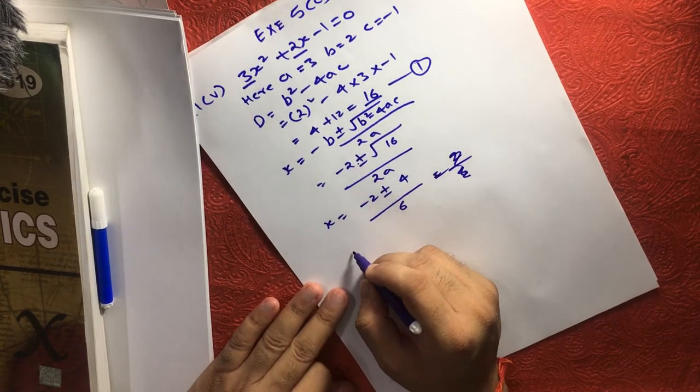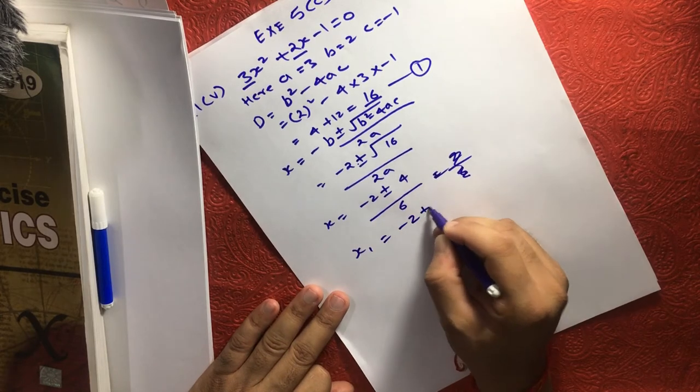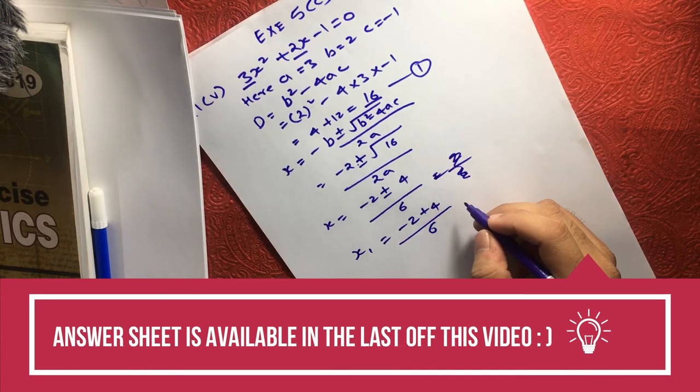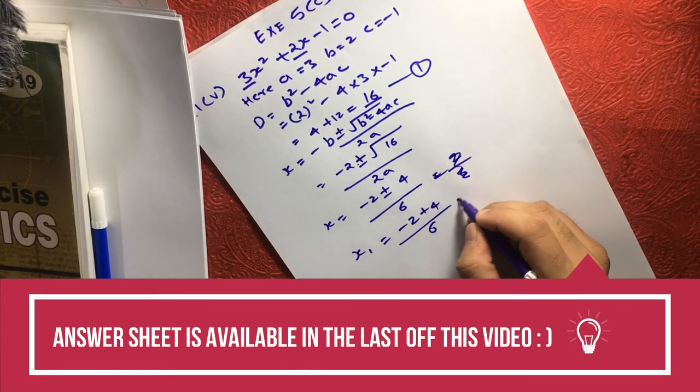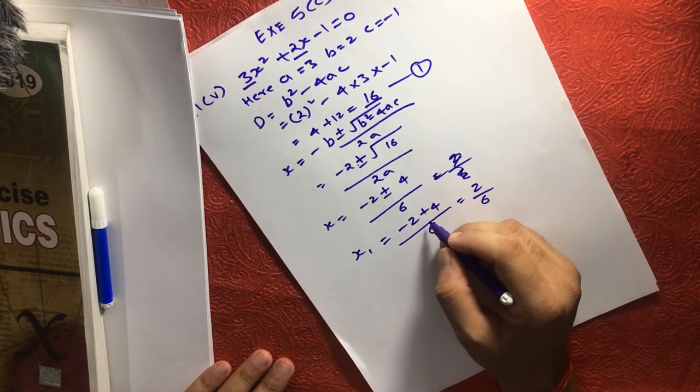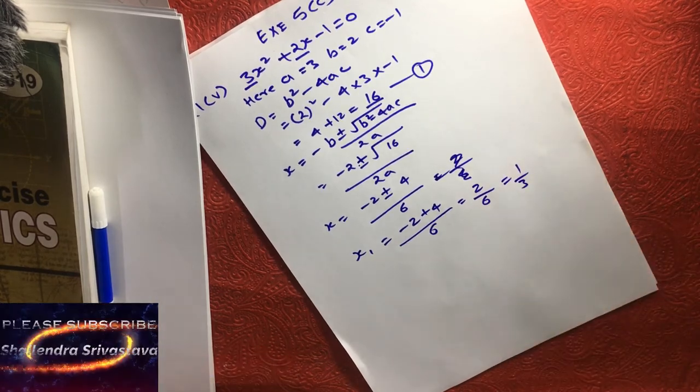Now, if we solve this, x1 is equal to minus 2 plus 4 by 6, because minus 2 plus 4 becomes 2 and this is 1 by 3.